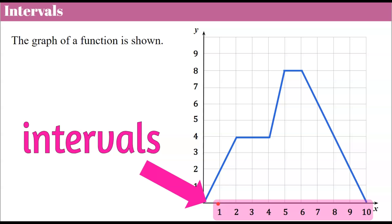Intervals could increase by twos, by fives, by tens. The X axis — our domain — could increase by ones, and our Y axis could increase by fives. They can increase at different intervals, as long as within the Y axis it's the same interval and on the X axis it's the same interval. Meaning, you can't increase by one, then by five, then by three — these have to be the same.